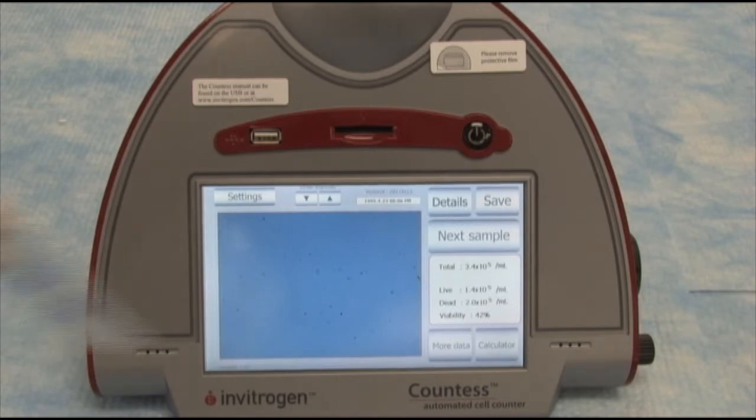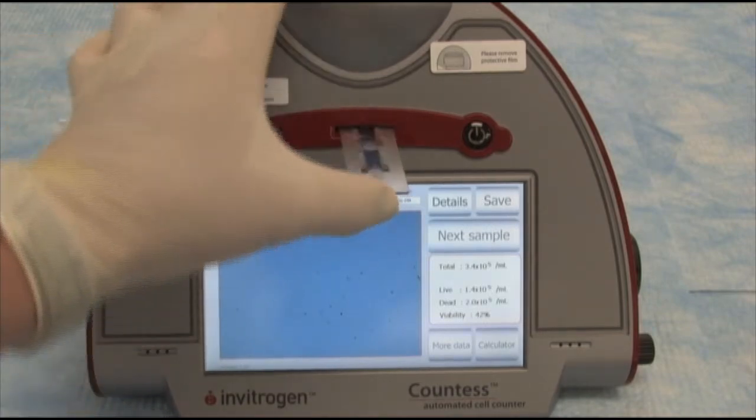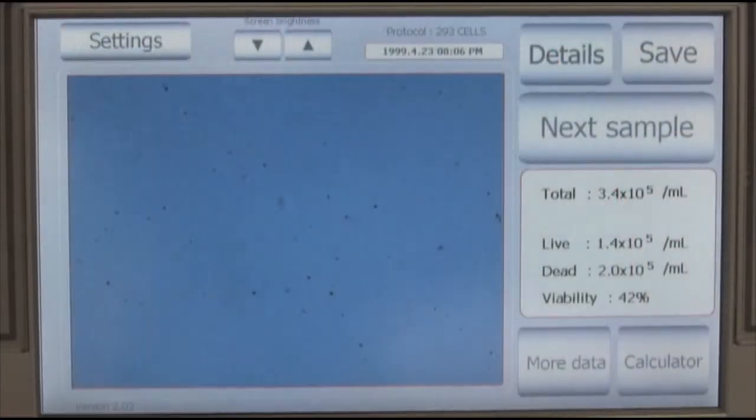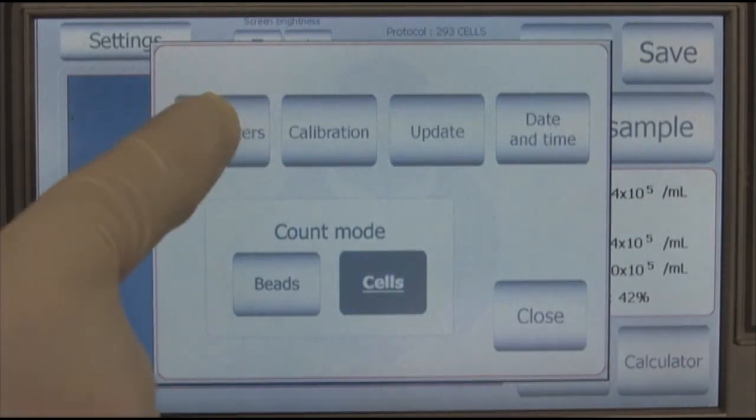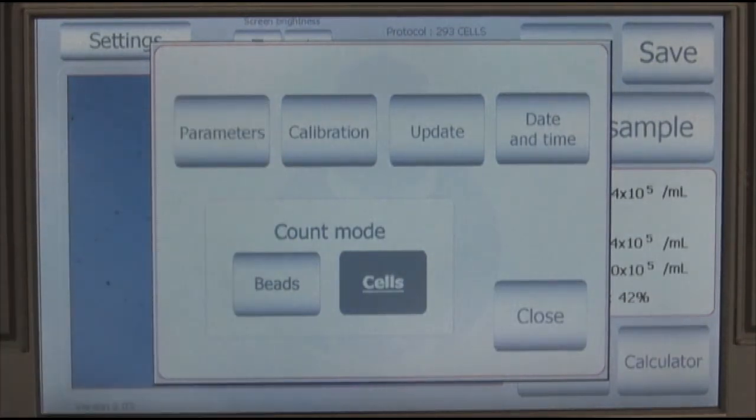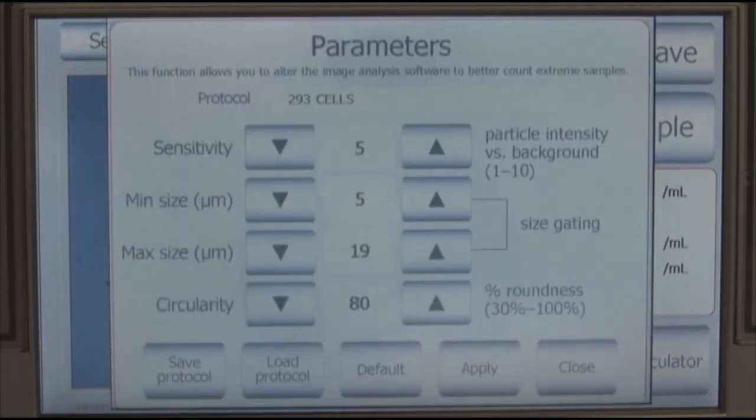I'm going to load the chamber slide into the Countess. I can go into settings, can set some parameters, maybe my sensitivity, my minimum size, my maximum size I'm looking for, can hit apply.